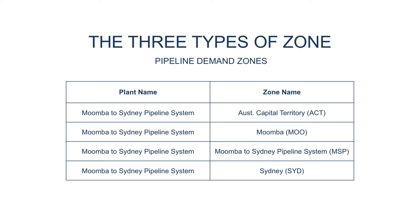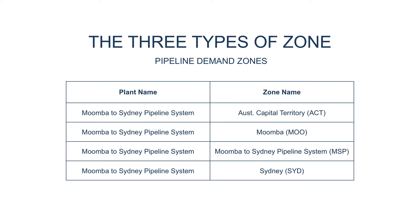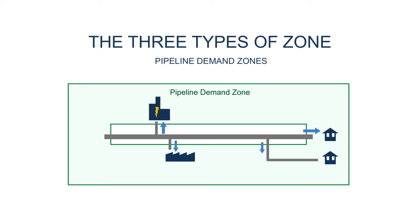Some demand zones on the bulletin board have the same name as the pipeline that delivers to them. For example, the Moomba to Sydney Pipeline System reports to a zone called the Moomba to Sydney Pipeline System. For the sake of these videos, we'll call them pipeline demand zones, even though they're really just a demand zone. Gas delivered to a pipeline demand zone is typically a measure of the demand of the pipeline as a whole, rather than at a particular location.